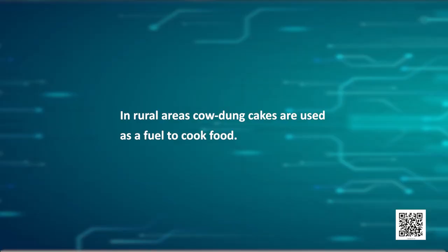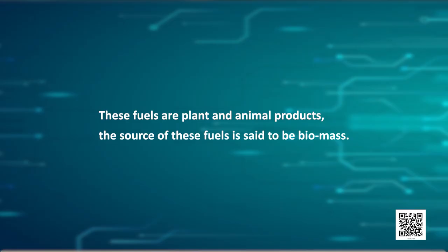We will also look at one of the non-conventional sources, or an alternative source, that is solar energy. Wood has been used as a fuel for a long time. If we can ensure that enough trees are planted, a continuous supply of firewood can be assured. In rural areas, cow dung cakes are used as a fuel to cook food. Given the large livestock population in India, this is a steady source of fuel. Since these fuels are plant and animal products, the source is said to be biomass.